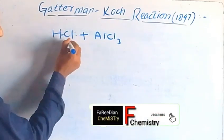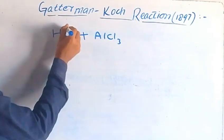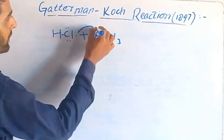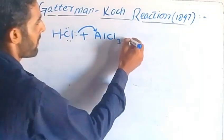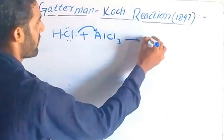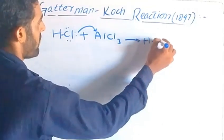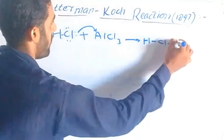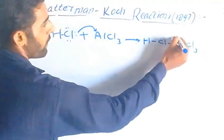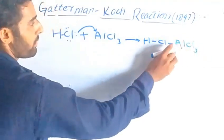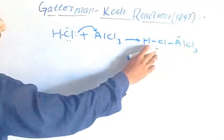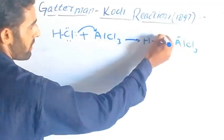This is capable of a lone pair. This lone pair attacks on the aluminium. Next, we have H–Cl interacting with AlCl3. The meaning is the chlorine becomes negative and the hydrogen becomes positive.